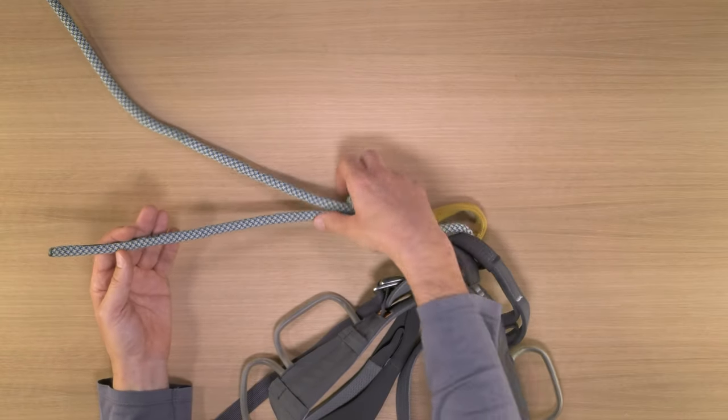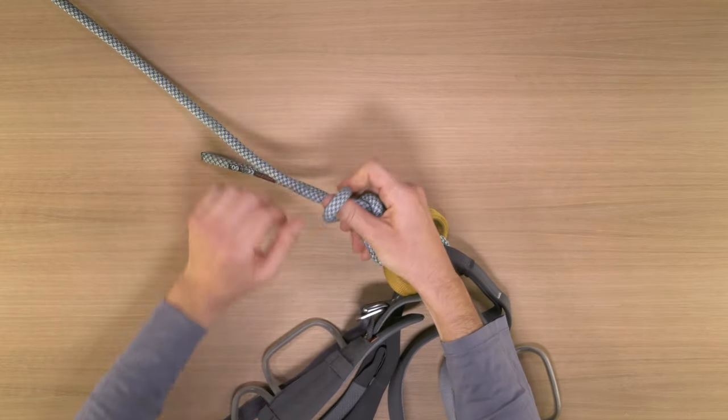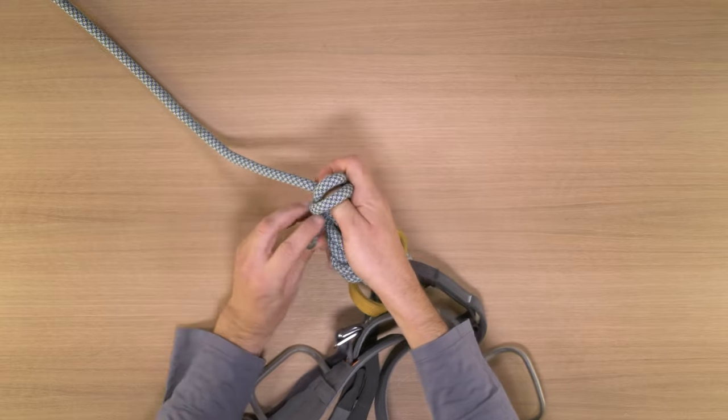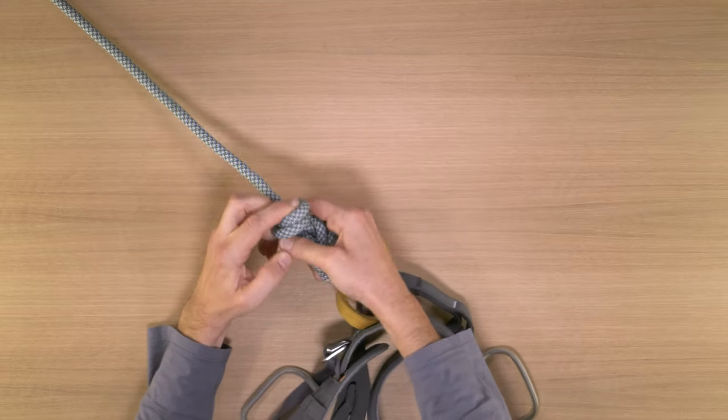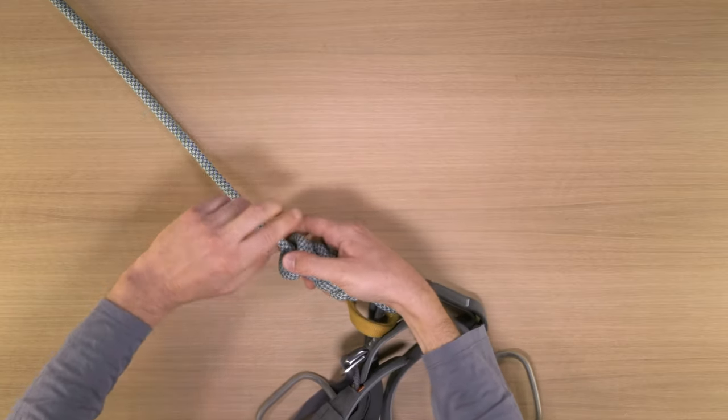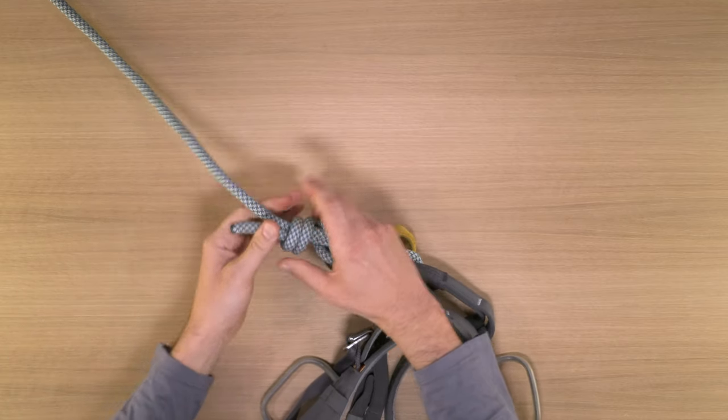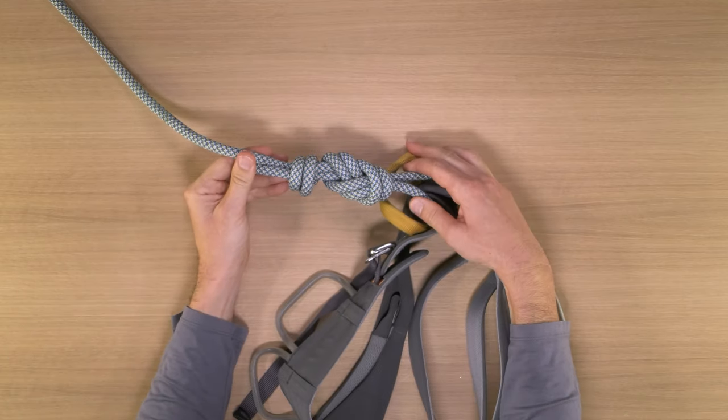This knot tied correctly with sufficient tail is a stand-alone knot. It does not require a backup, unlike a bowline, which you must back up. However, if you have a bunch of tail and you want to keep it out of your way, you can tie a double overhand to keep that tail out of the way.